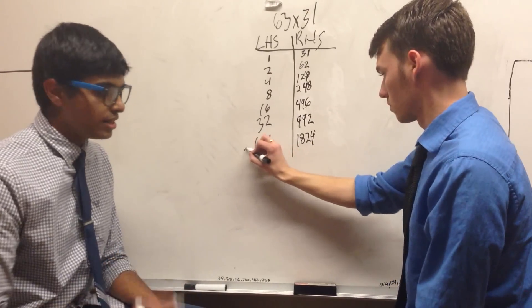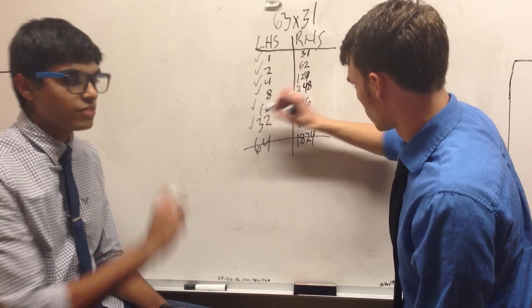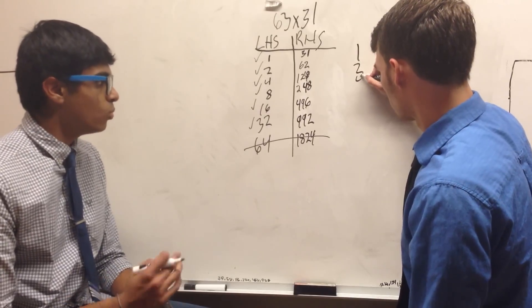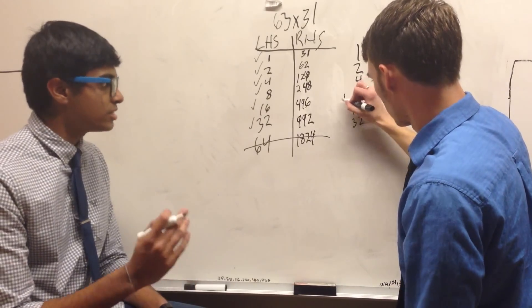Once you have all those numbers in, add up the left-hand side in a way where it adds up to your left-hand number, 63. For us, it's going to be 1 plus 2 plus 4 plus 8 plus 16 plus 32, which adds up to 63.